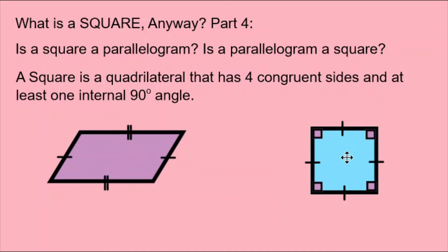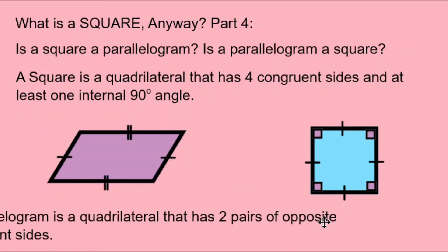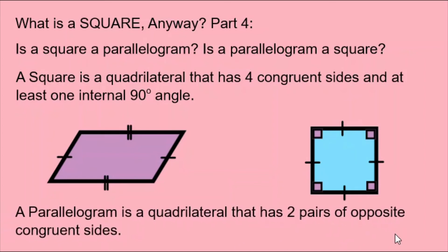And a square is necessarily a parallelogram. Here's the definition of a parallelogram. A quadrilateral that has two pairs of opposite congruent sides.